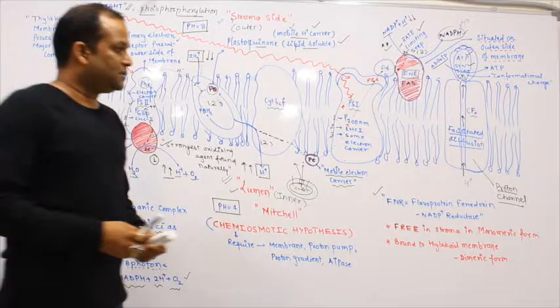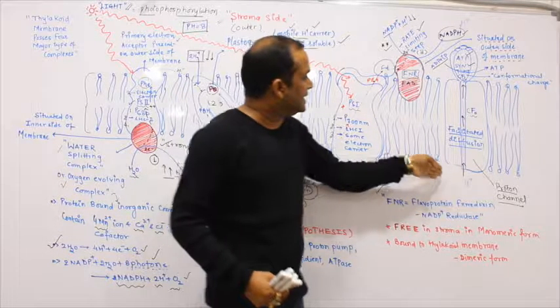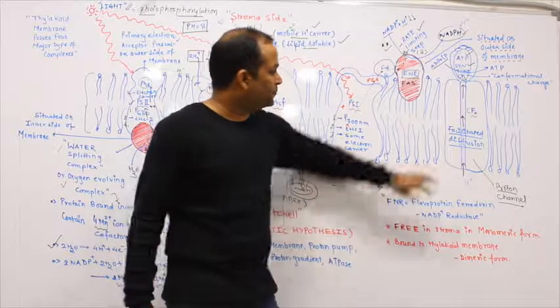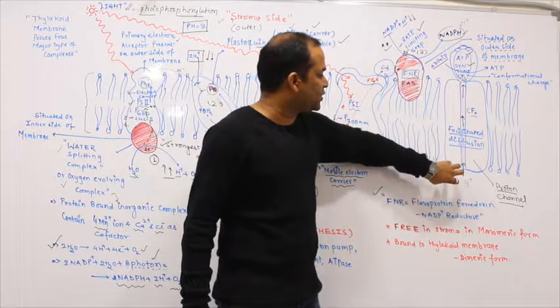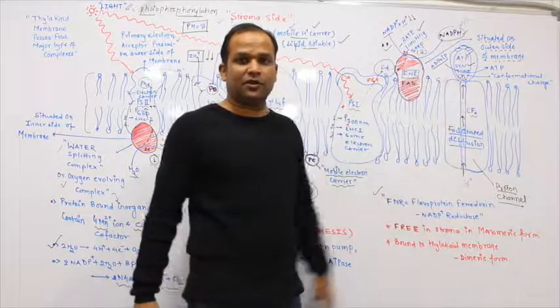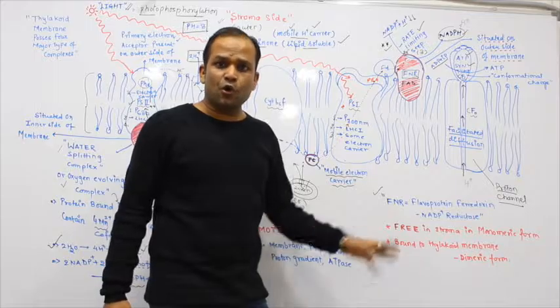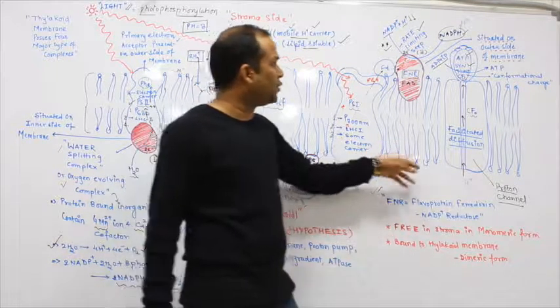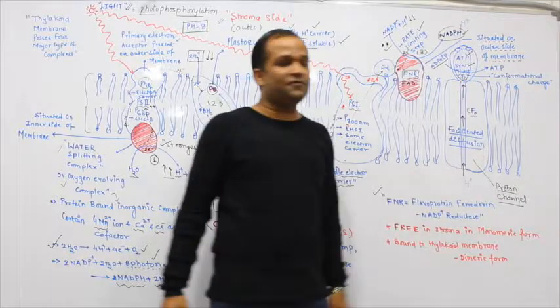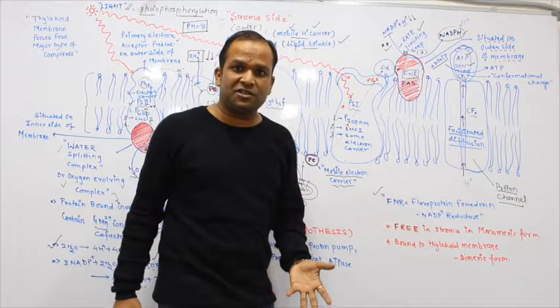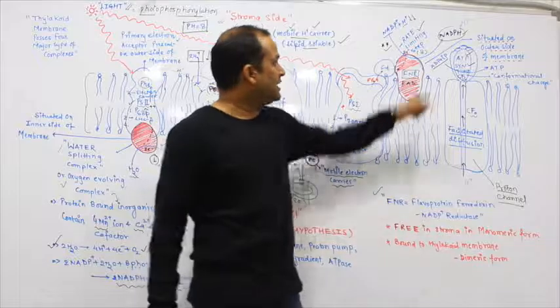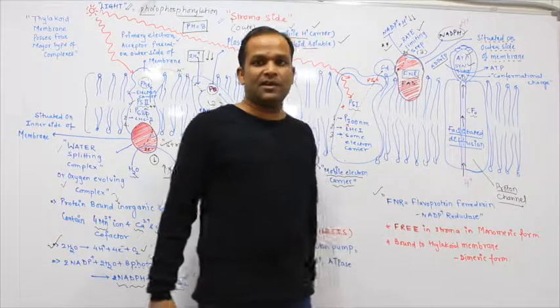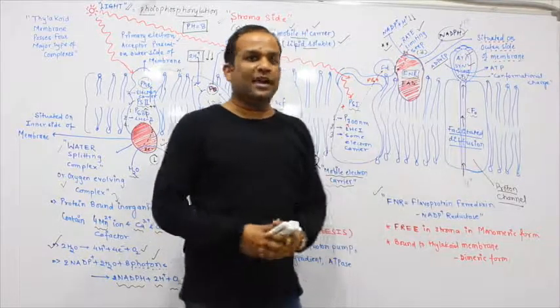During this decreasing concentration gradient, when proton is transported from high concentration to low concentration, energy is released. That energy is required for conformational change of F1. When F1 changes conformation, it converts ADP plus Pi into ATP.